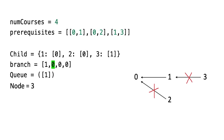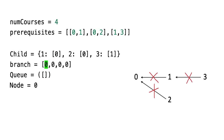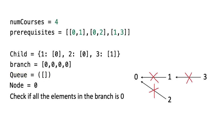Now we pop node 1 from the queue, identify its corresponding parent, and remove the branch. The parent of node 1 is node 0, so we add 0 to our queue and pop node 0. Now our queue is empty, and we check if all the elements in the branch list are 0. In our case, all the elements in the branch are 0, so we return true.